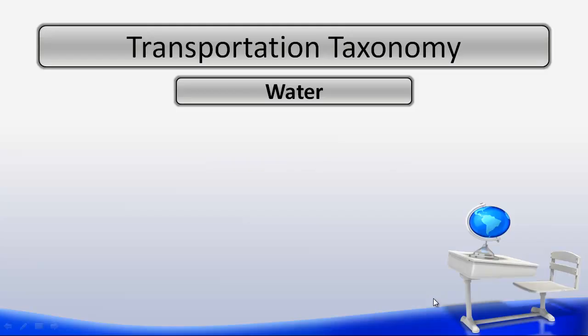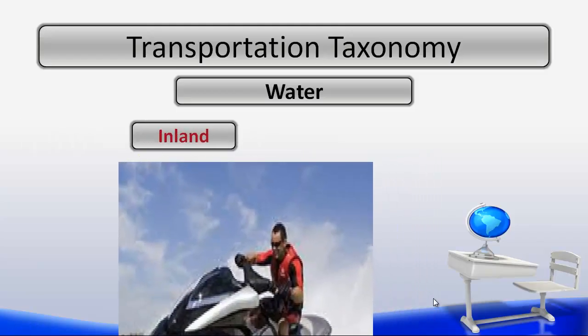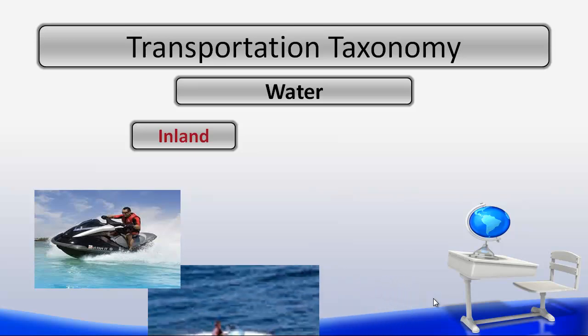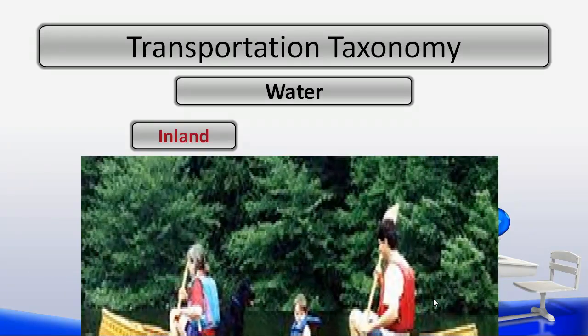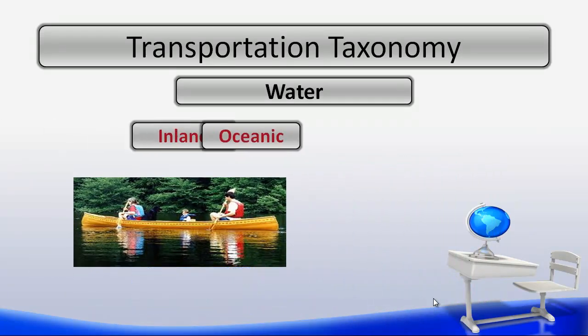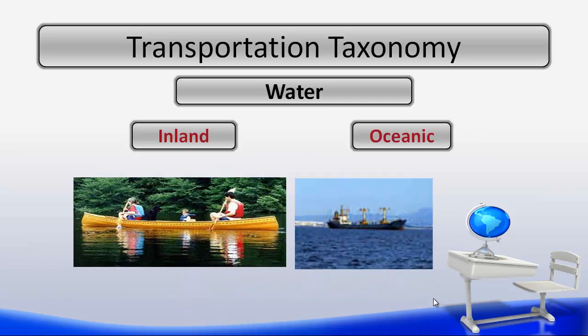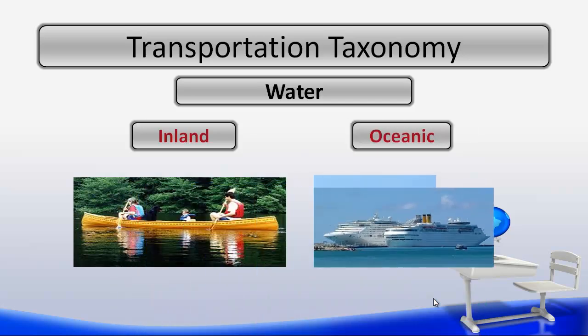Our next environment shows examples of water transportation based on the inland subsystem, which would include PWCs, boats, canoes, rafts, and others. Some examples of oceanic transportation would include ships, barges, submarines, surfboards, and many more. In the water environment, there are many methods of transportation that can be used in both inland and oceanic waterways.